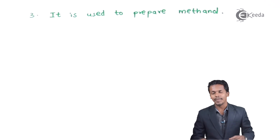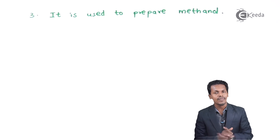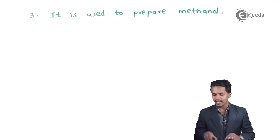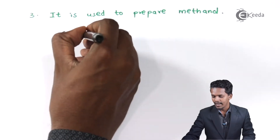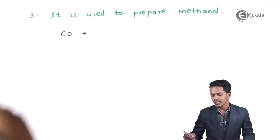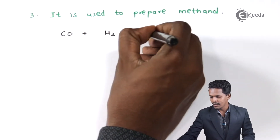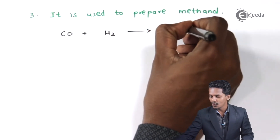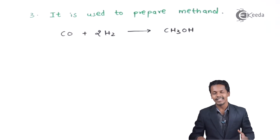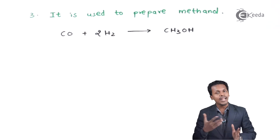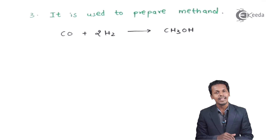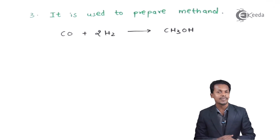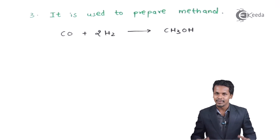The next point is that hydrogen is used to prepare methanol. Methanol can be prepared by treating hydrogen gas with carbon monoxide. If carbon monoxide (CO) is reacted with hydrogen molecules under certain conditions of temperature and pressure, the product we obtain is CH₃OH. This is how hydrogen plays a vital role in reducing carbon monoxide to form methanol.